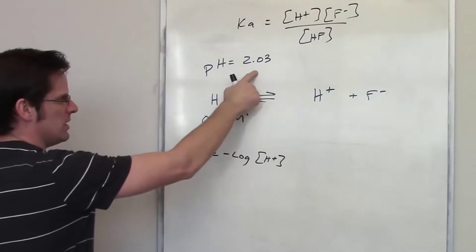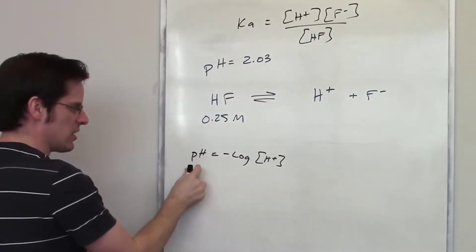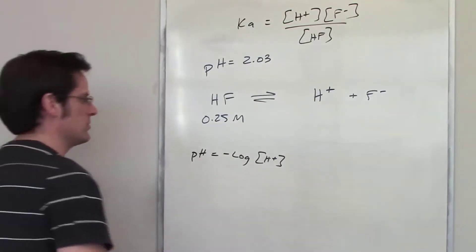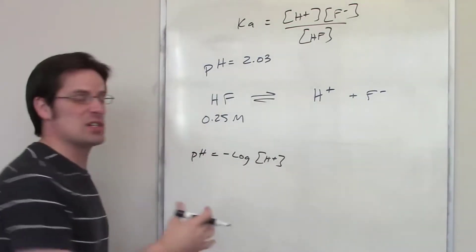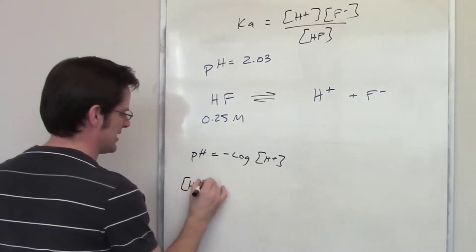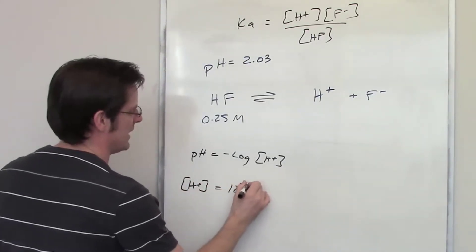So, you could put in 2.03 here and use some rigmarole to determine what H plus concentration is equal to. But you don't really have to do that because there's already an equation that I've given you elsewhere that says the concentration of H plus is equal to 10 raised to the negative pH.